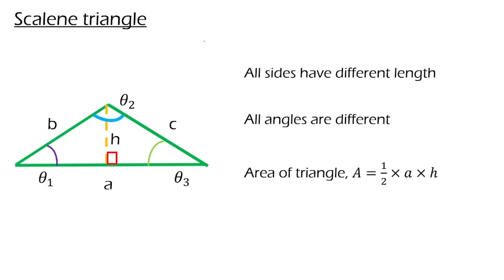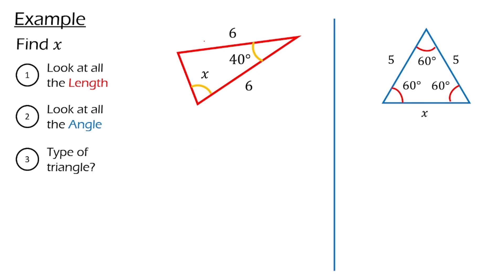Let's try some example questions on triangles. I have listed down the steps on what to look for when dealing with triangles. First, we need to look at the length, followed by the angle, and finally decide what type of triangle it is. Looking at this triangle, we notice that two sides have the same length. This shows that it is an isosceles triangle.